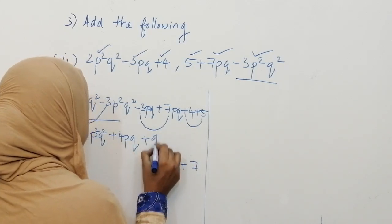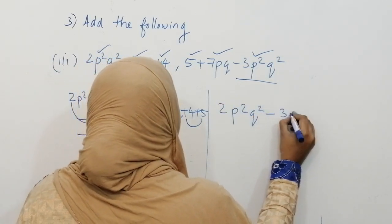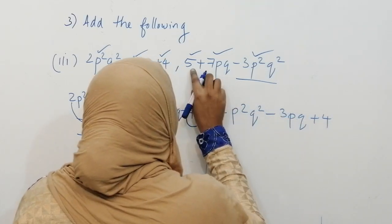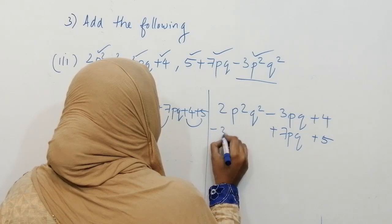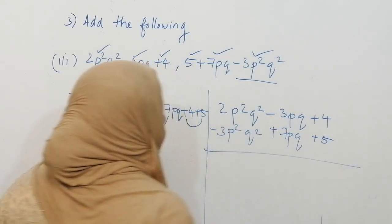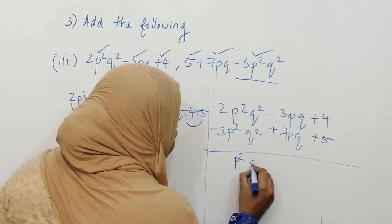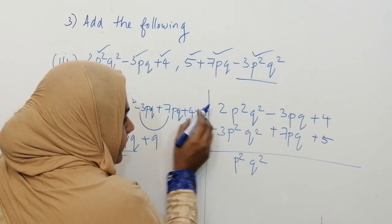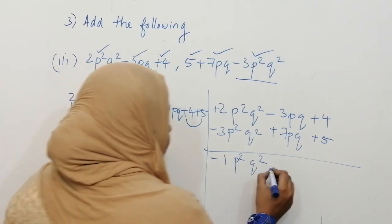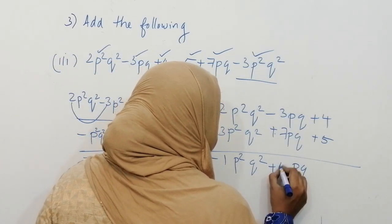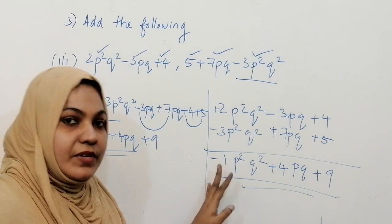We can also try the column method: write 2p²q² minus 3pq plus 4, then below it 5 plus 7pq minus 3p²q². Align p²q² terms — same variable, different sign, subtract and give greater number sign: minus 1p²q². For pq terms, different sign: 4pq. Constants: 9. You get the same answer: minus p²q² plus 4pq plus 9. Choose whichever method is easier.